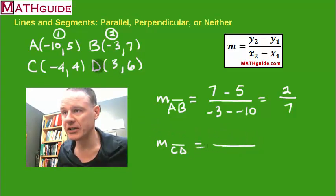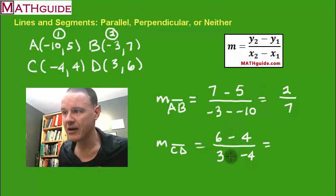How do I find the slope of CD? Well, again, I'm going to put the y values on top, 6 and 4. I'm going to put the x values in the bottom, 3 and negative 4. What does the formula say to do with these values? It says subtract them. Boy, there's another double negative. Look at that. So 6 minus 4 is 2. 3 plus 4 is, of course, 7.